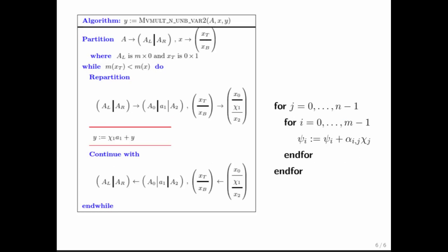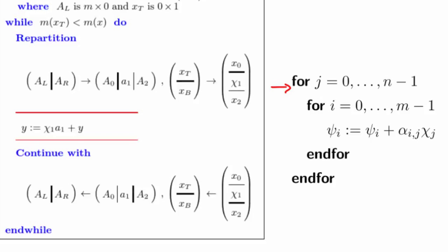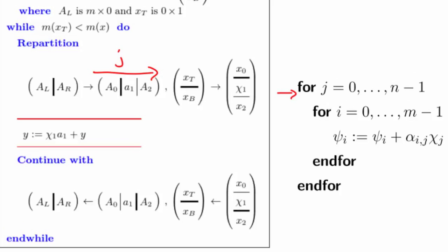Similarly, you can look at the other algorithm. And what you notice is that the outer loop goes across the columns. Well, here the algorithm exposes one column at a time. And you notice on the left here that Y is being updated with an XP operation, where you take a multiple of the current column and add it to Y. That hides completely the operations in this innermost loop.